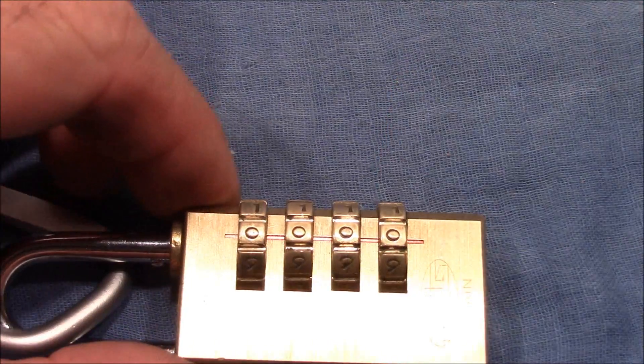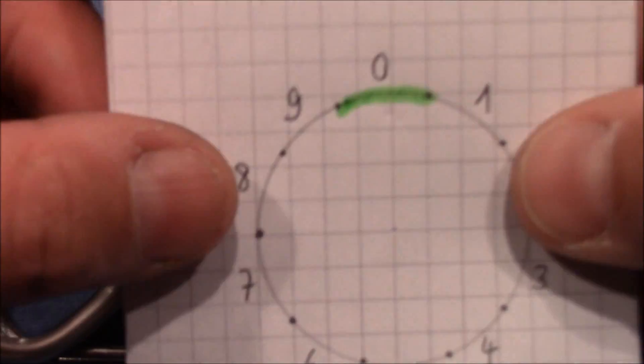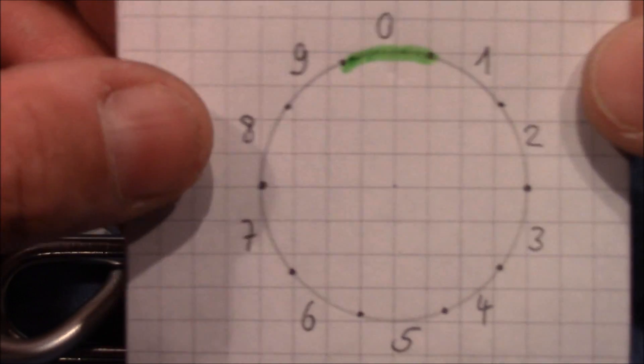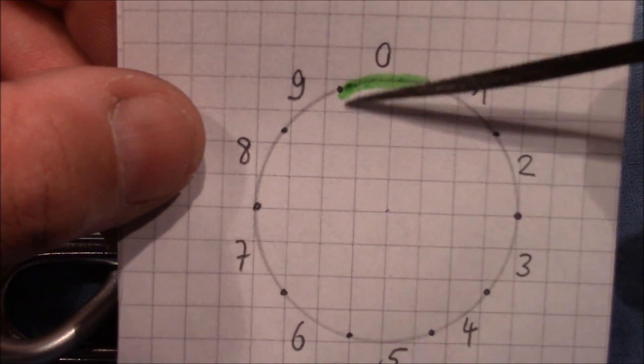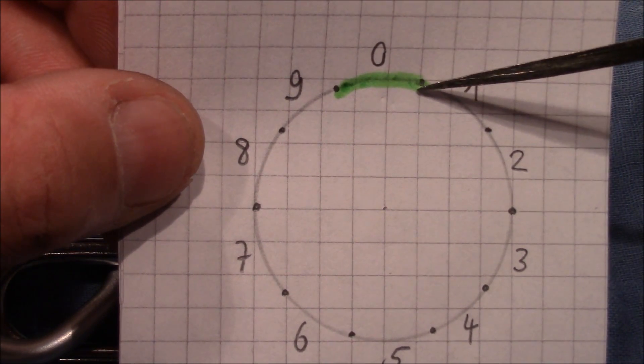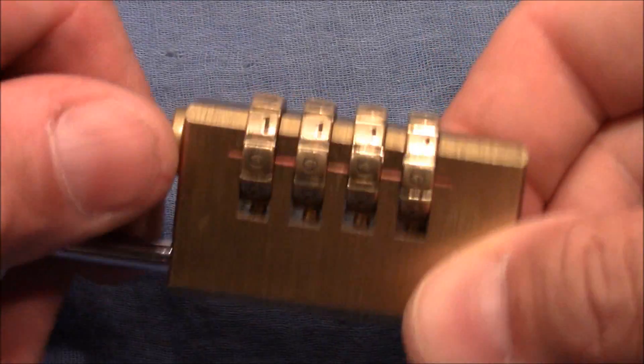So the last wheel has this type of gate layout, it has only one true gate at zero.